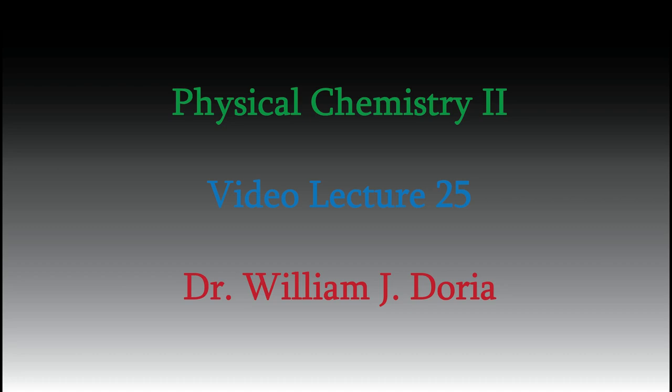Hi, and welcome back to my series of videos for Physical Chemistry 2. In the last video, we saw that for systems that have more than one electron, we're unable to determine the exact wave function. Instead, we approximate the wave function using a trial wave function, which we represent using the symbol phi.